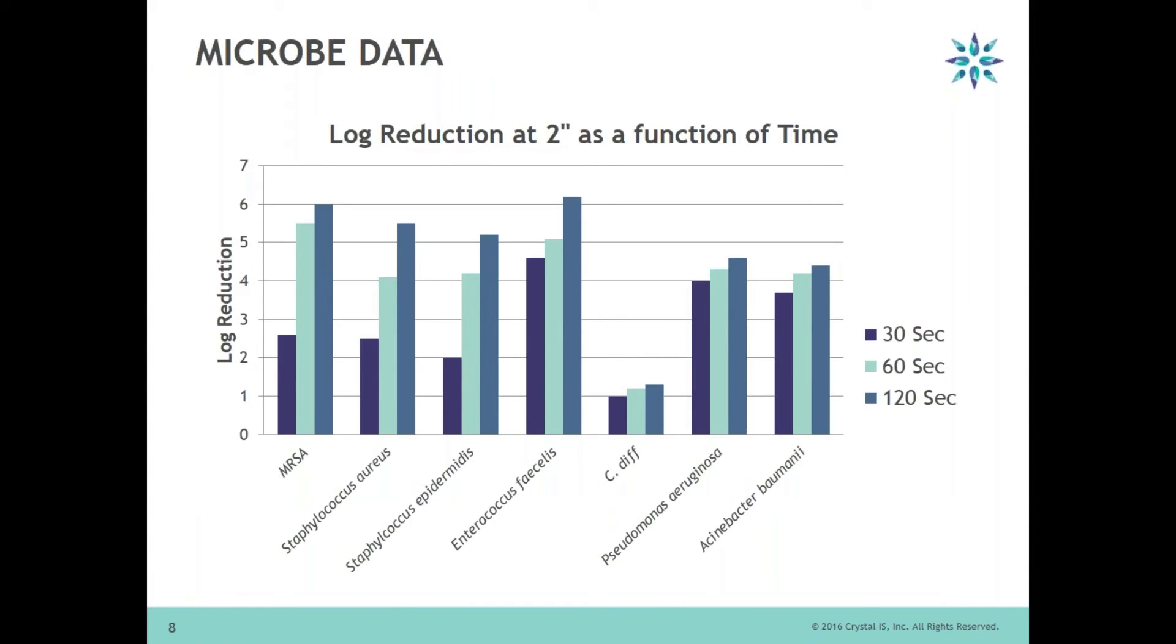So here is the detailed experiment we did with different microbes. What we show here is different time factors, what kind of a log reduction we would get if we had 30 seconds, if we had 60 seconds, or 120 seconds. As you can see MRSA was one of those microbes where we got a pretty high log reduction.